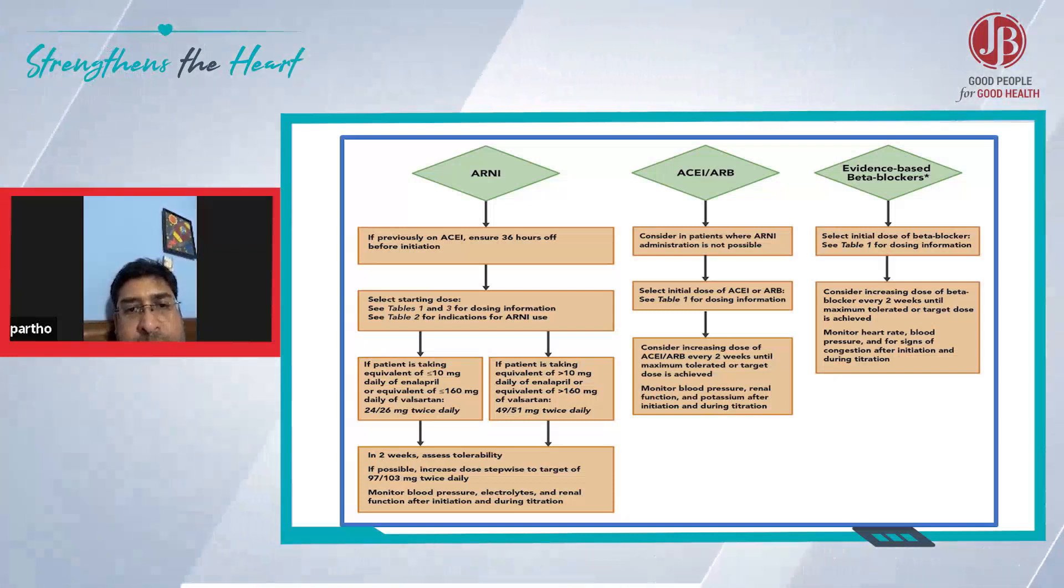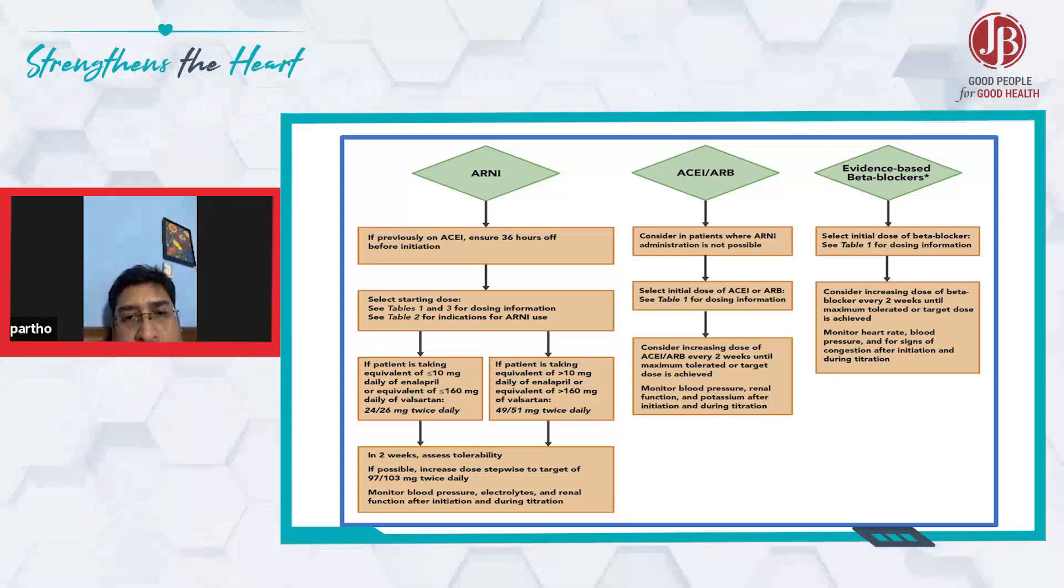If the patient is taking less than 10 mg of enalapril or less than 160 mg of valsartan, we can start at 25 BD of sacubitril-valsartan.